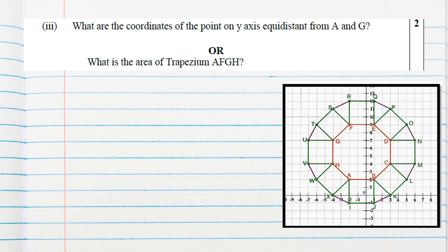Question 3 for two marks — we have an internal choice. The first option: what are the coordinates of the point on the Y-axis which is equidistant from A and G? Let that point be Z, which lies on the Y-axis, so it has x coordinate 0 and its coordinate is (0, y). This point is equidistant from A and G.